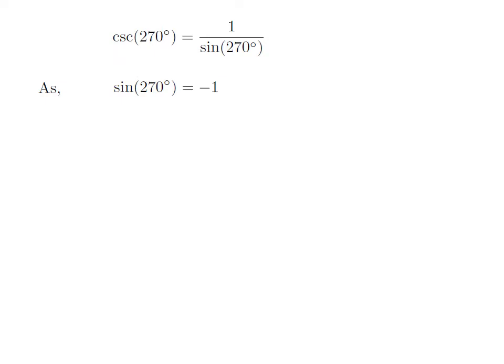We know the value of sine of 270 degrees is equal to minus 1. How to find the value of sine of 270 degrees has been explained in the video appearing in the upper right corner. The URL of the video has been mentioned in the description section as well.